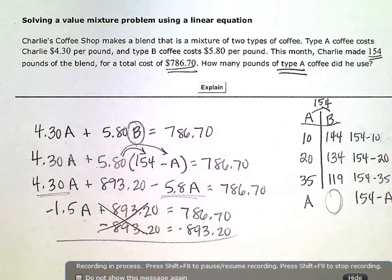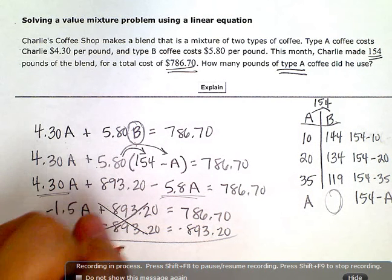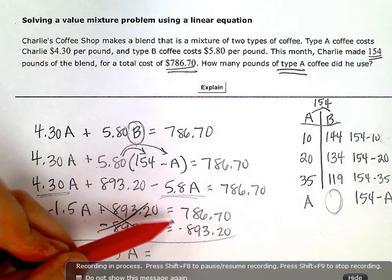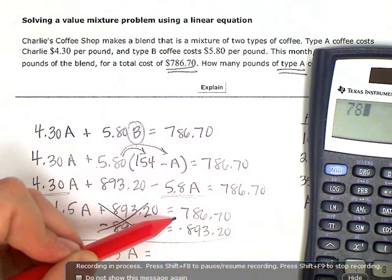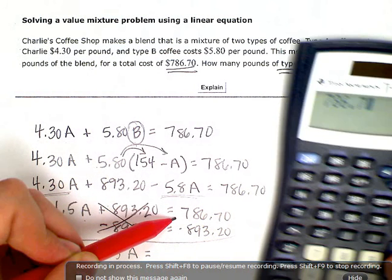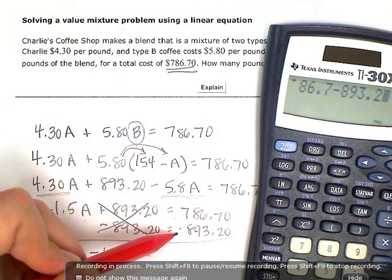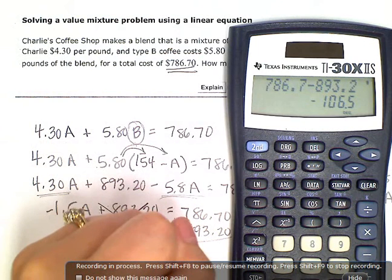That makes zero. So I'm left with just negative 1.5A on the left side. And over here, I'm going to simplify. So 786.7 minus my 893.2 gives me negative 106.5.